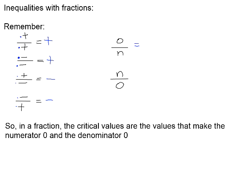If we look at division by zero: if we have zero divided by a number, that is possible and the final answer will be zero. However, if we have a number divided by zero, that is undefined. So we cannot take a number and divide it by zero.